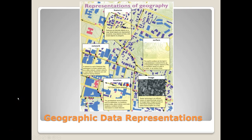As you learned in the last video, geography can be represented in a number of different ways within ArcGIS. One of the ways that GIS data can be represented is by features — points, lines, or polygons. These are discrete objects on a map, and each of these features has attributes associated with them.